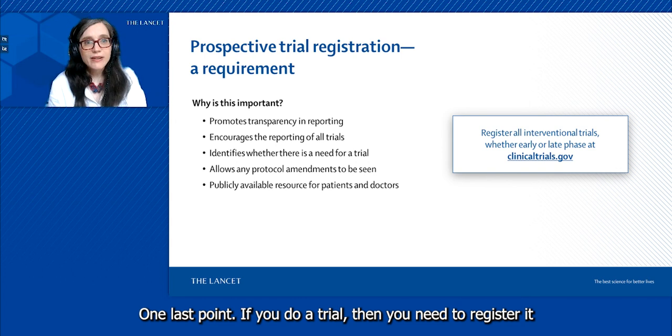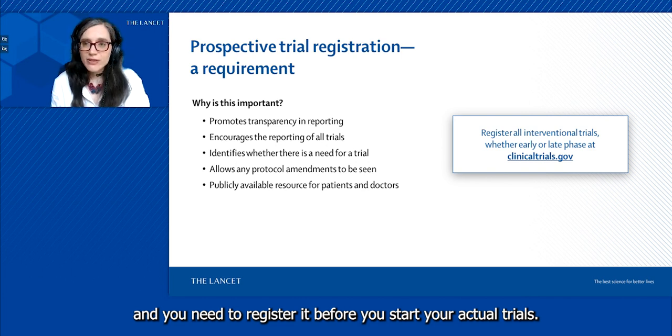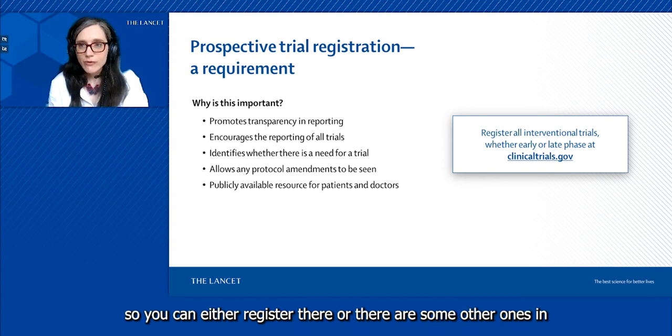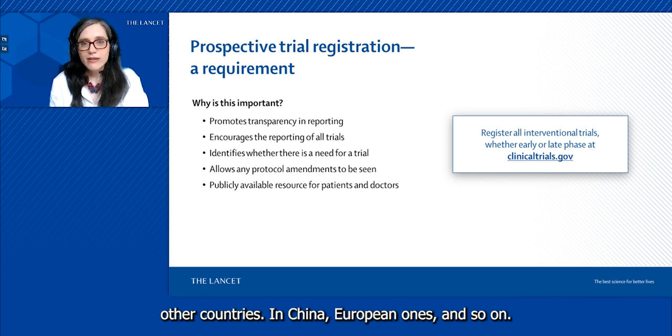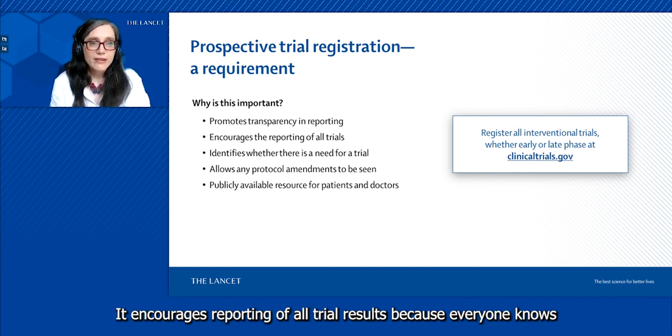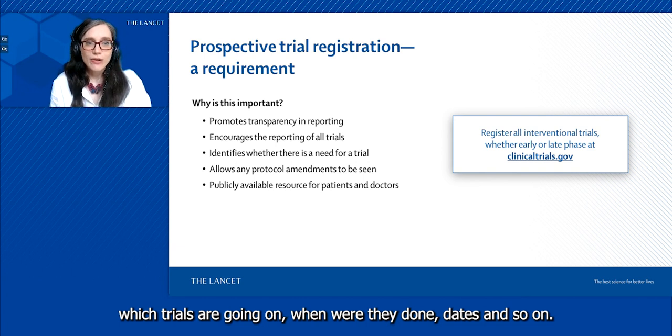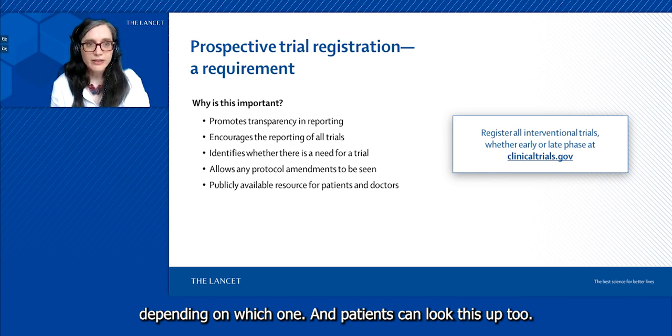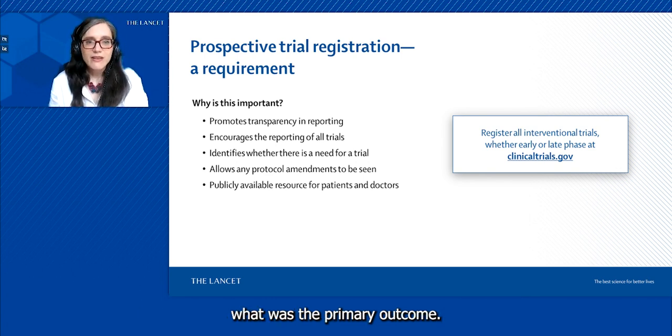One last point: if you do a trial, then you need to register it and you need to register it before you start your actual trial. There are a couple of registries around—the biggest one is ClinicalTrials.gov. You can either register there or there are some other ones in other countries—China, European ones, and so on. This is important to keep your research transparent. It encourages reporting of all trial results because everyone knows which trials are going on, when were they done, dates and so on. You can even put some of the results in the registries depending on which one. Patients can look this up too, doctors can look up what was exactly done, what was the primary outcome.